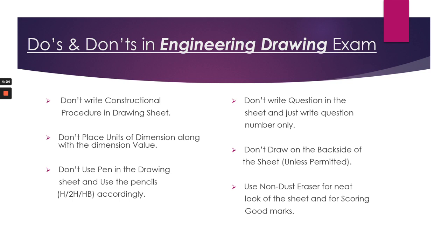And the second thing is you should never place the dimension unit along with dimension value. For example, if the side of the pentagon is 50 mm, we should not write 50 mm there, we should write only 50 there. At the end of the drawing sheet, we have to say that all dimensions are in mm. So never place the dimension unit along with dimension value.